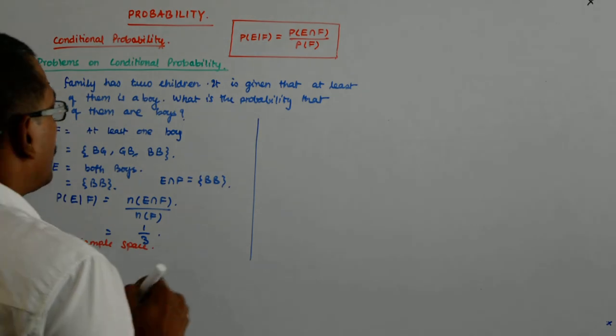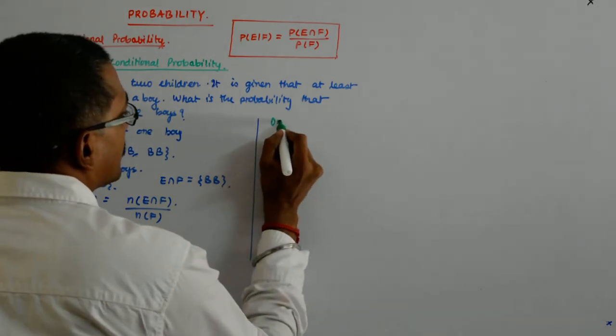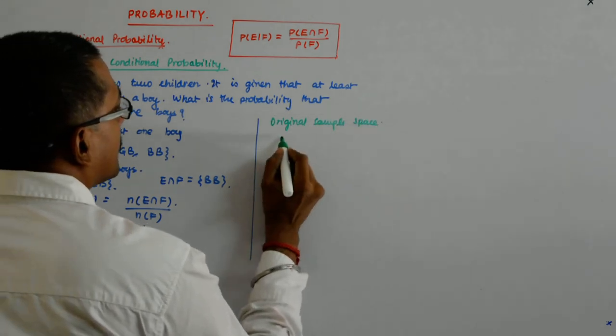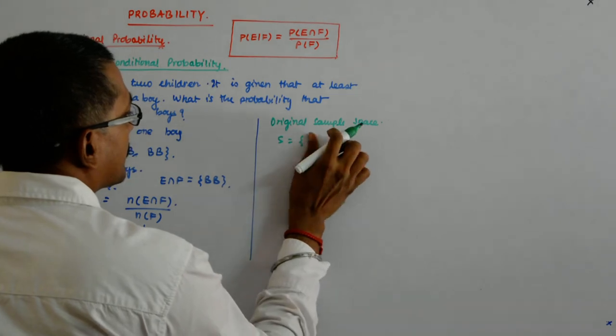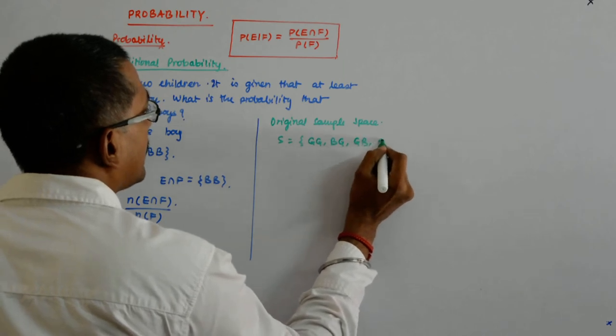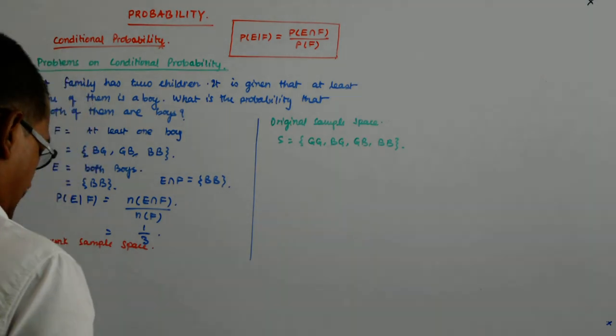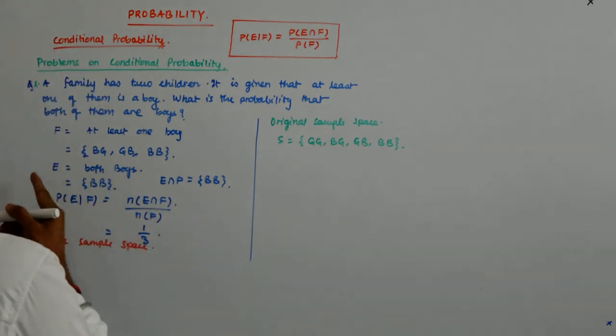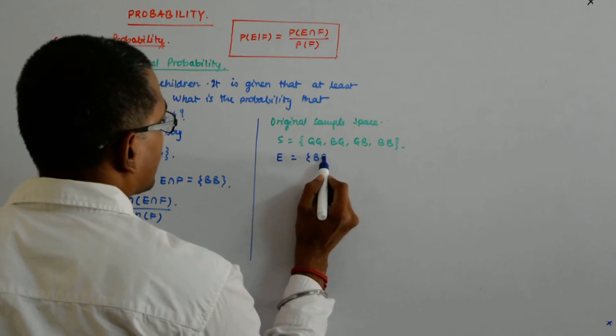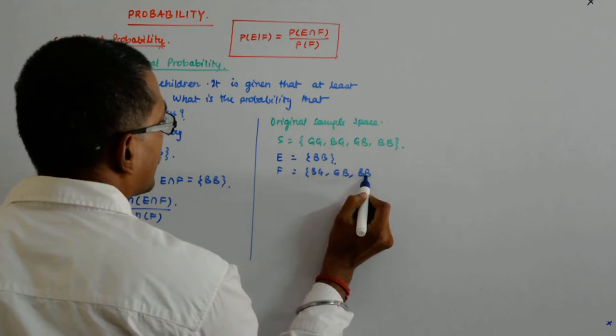If you do not want to work on the shrunk sample space, what is the original sample space? S is G, G, B, G, G, B, and B, B. And what is E? E is obviously B, B. And F is B, G, G, B, and B, B.